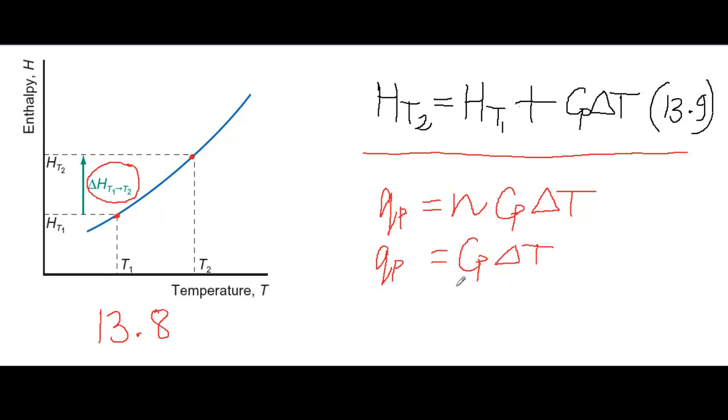So this quantity QP is what's going to give us the change in enthalpy for a temperature change delta T.